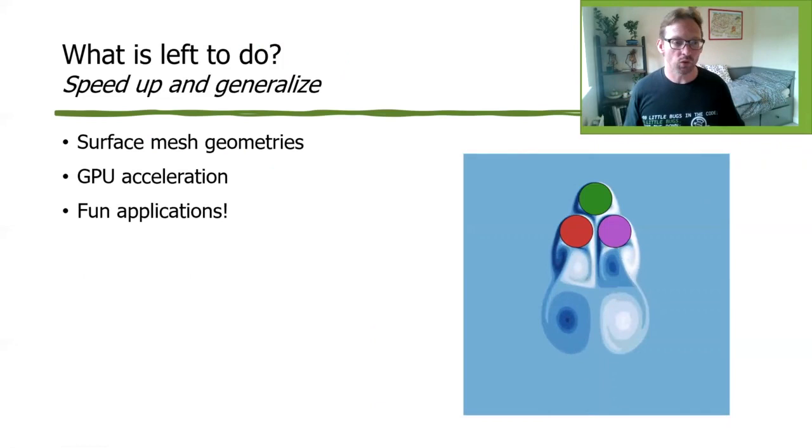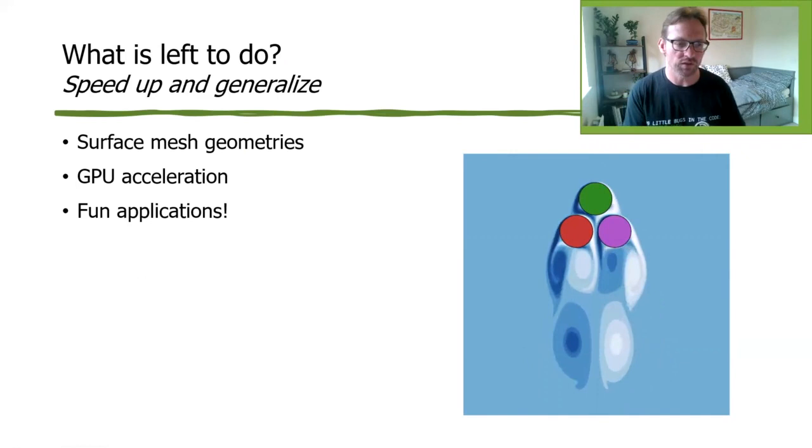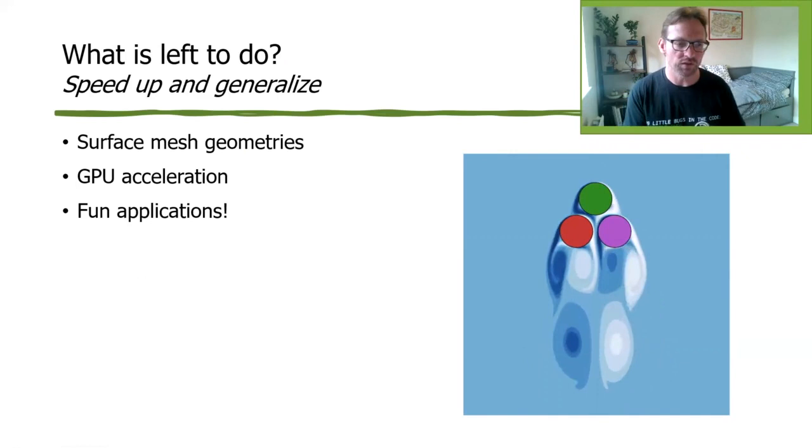So that's it. That's WaterLily. We're having a really fun time doing this, but there's still plenty more to be done. So for instance, a surface mesh, that's going to be a pretty easy adjustment. So if you want to pull in an STL, that would be a fun little project. We really want to get it on GPUs to help speed up three-dimensional simulations, especially. And I think there's a bunch of fun additional applications. It's really easy to use this to try new things out, just a couple hours, and you can usually get a fun, cool simulation. So give it a try.